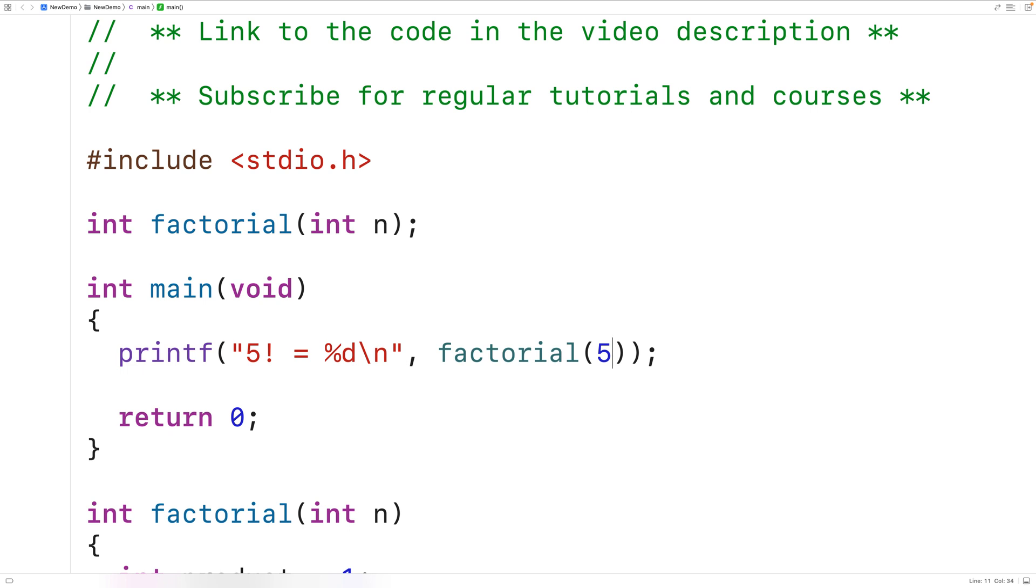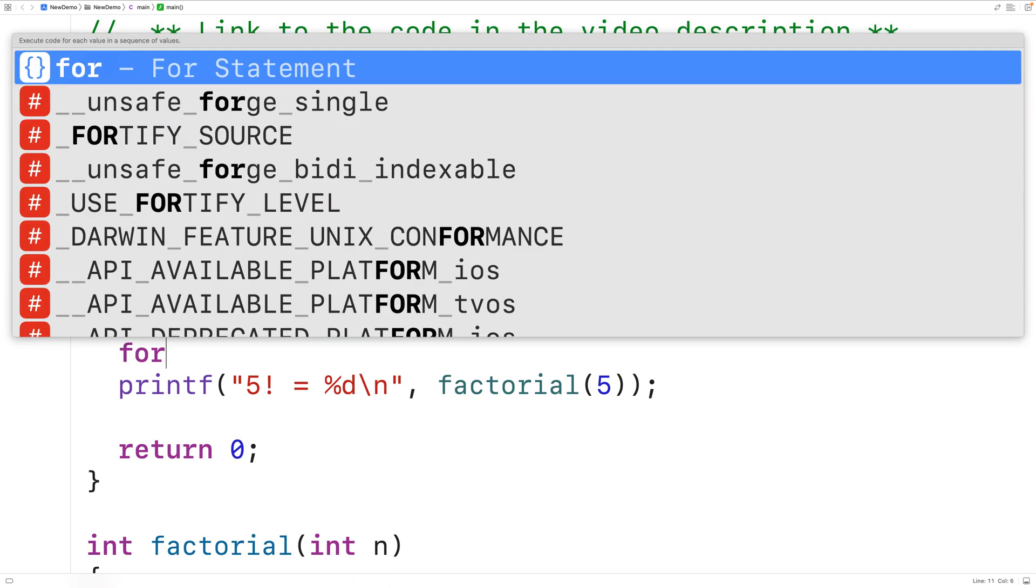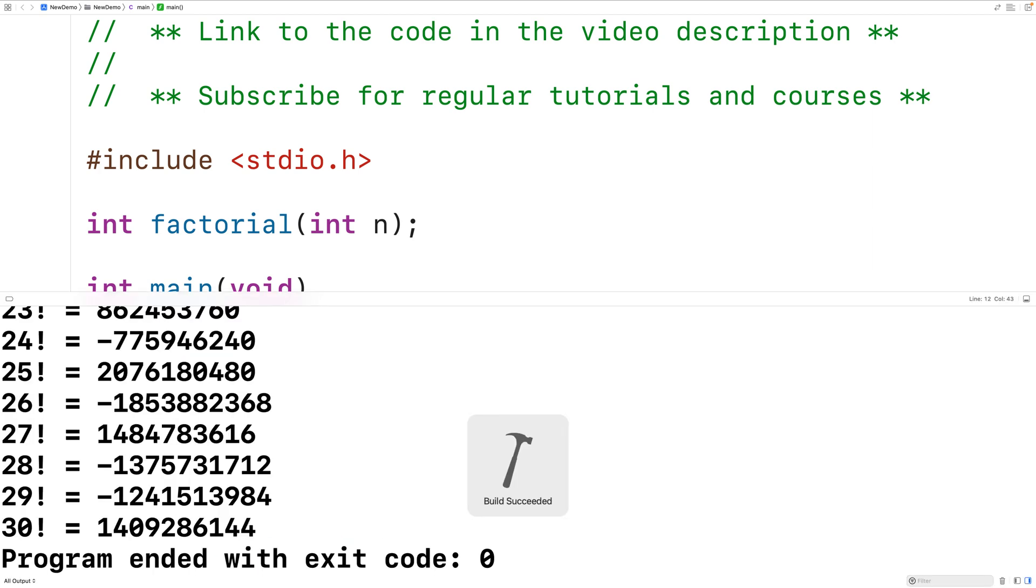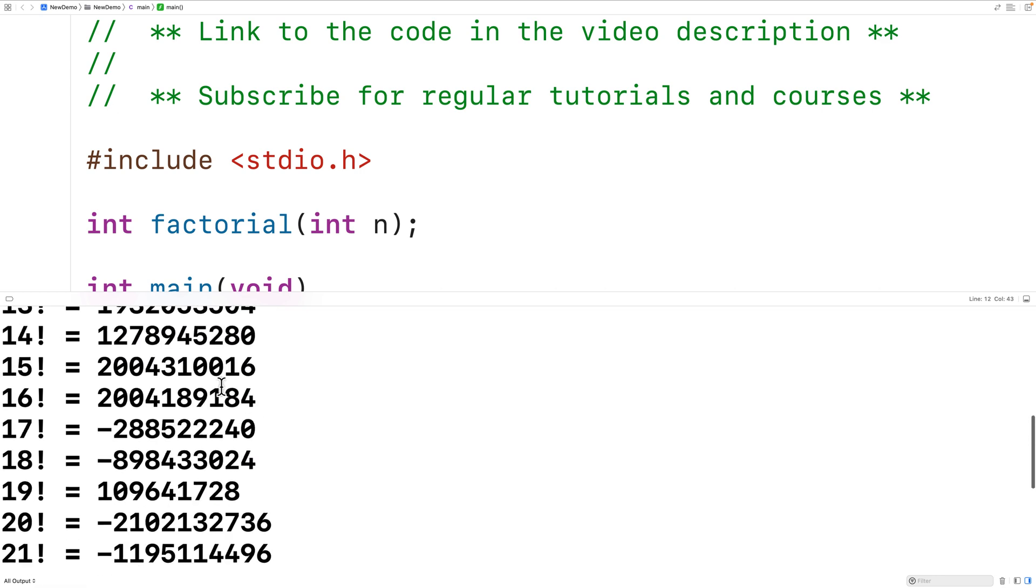We could call this function for every integer from 1 to 30. So we could have here for int i is equal to 1, i is less than or equal to 30, i plus plus. So this for loop is going to have a counter variable i that's going to go from 1 to 30 by 1. What we'll do is output i here. So we'll have percent d to output i. And then we'll have i here to output that i value. Then we'll call the factorial function with i. So now if we save, compile, and run our program, we get the calculated factorials from 1 to 30.